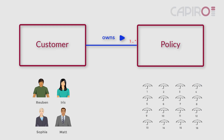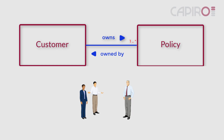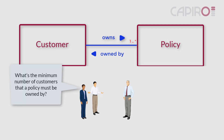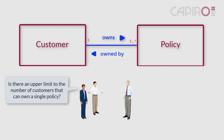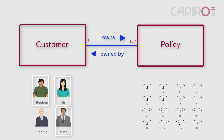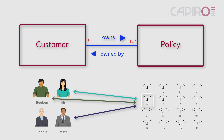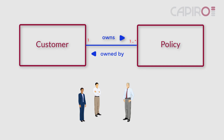We can also look at things the other way around, i.e., from the policy to the customer. A policy is owned by a customer. The analysts can ask: what's the minimum number of customers that a policy must be owned by? Theo says it's 1. Is there an upper limit to the number of customers that can own a single policy? Theo says that policies can be owned by more than one customer. For example, let's suppose that Matt, Ruben, and Iris buy a new policy together — i.e., the policy is owned jointly by all three of them. Theo says there's no upper limit, so we write 1..* on the model.